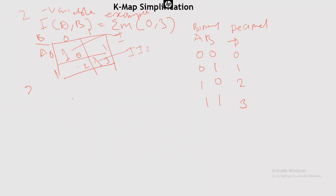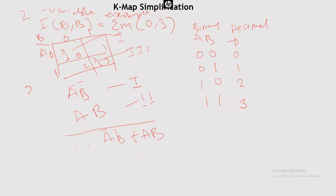Let's compute what we have in group 1. This will be Ā B̄ — that is A=0, B=0. For group 2, it will be A=1, B=1, giving AB. So we now add them: the result is Ā B̄ + AB.